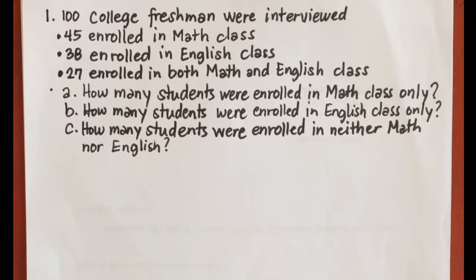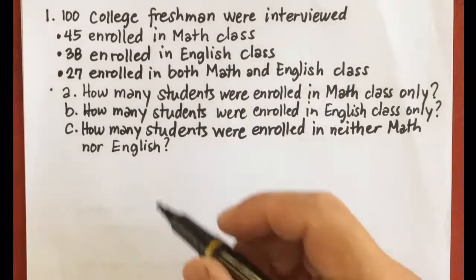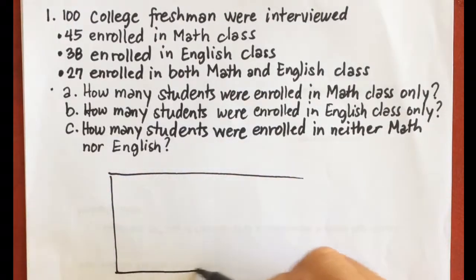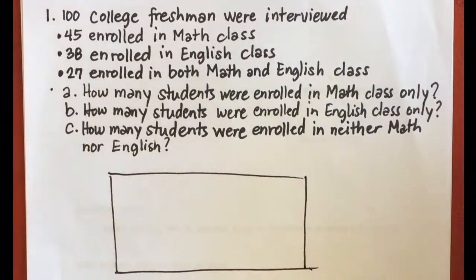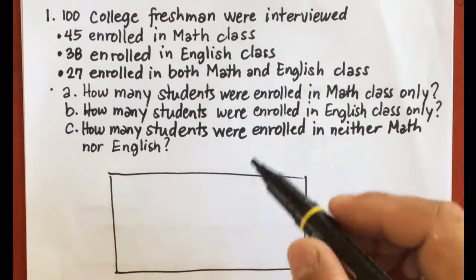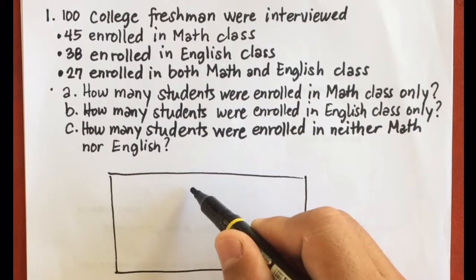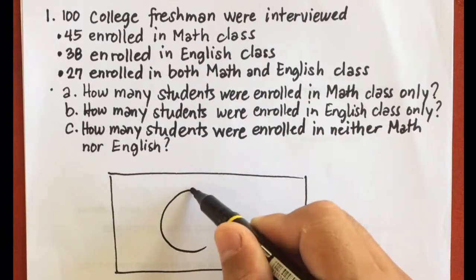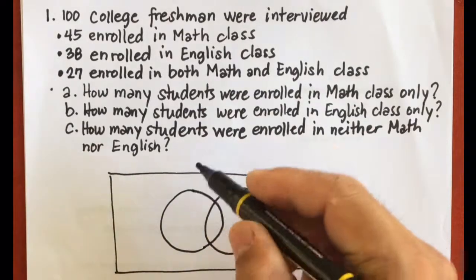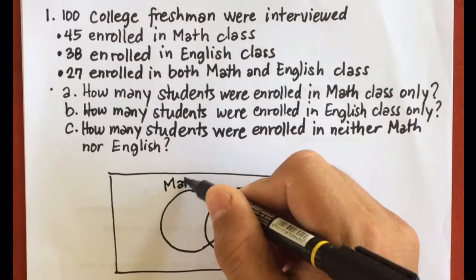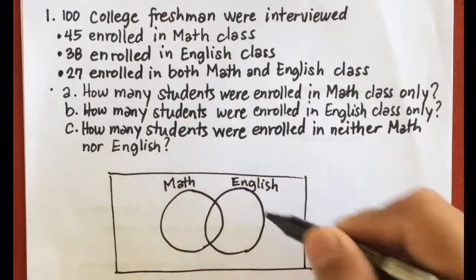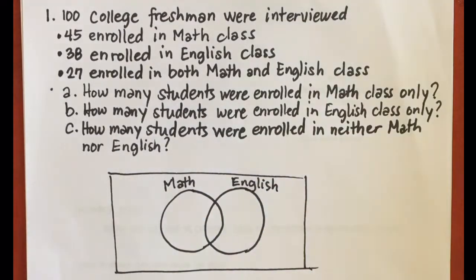For our solution, we're going to use a Venn diagram. We're going to draw a rectangle. Since there are two sets here for math and English class, we're going to draw two overlapping circles — one for math and one for English. They are overlapping because they have an intersection.